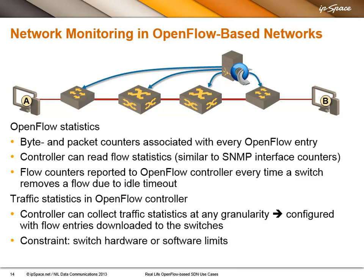There's another benefit we get in OpenFlow-based networks: every single OpenFlow entry installed in the switches also gets, by definition, byte and packet counters. The controller, through OpenFlow — not through SNMP — can read those flow statistics. If a flow ever expires, the switch automatically sends the last statistics to the controller. Using OpenFlow, the controller can configure the collection of statistics at any granularity.